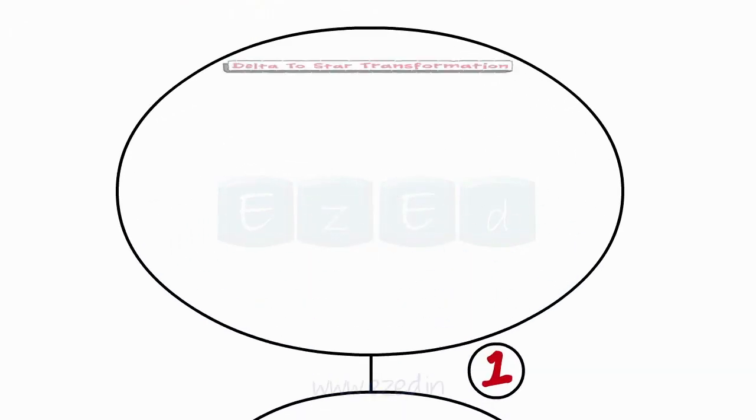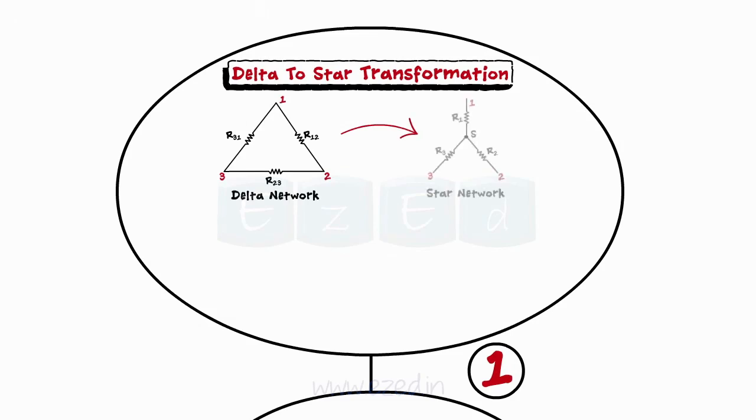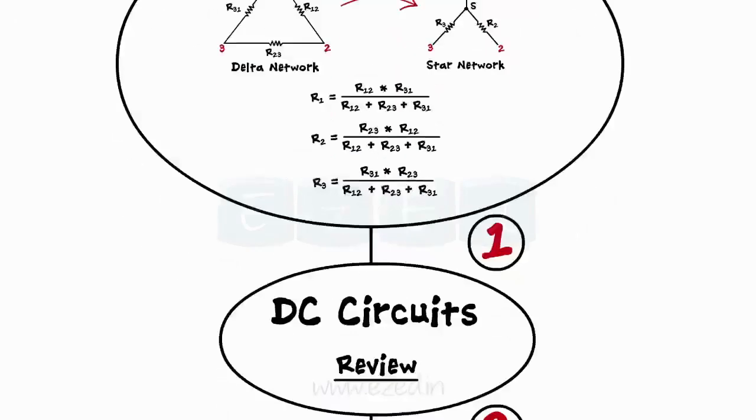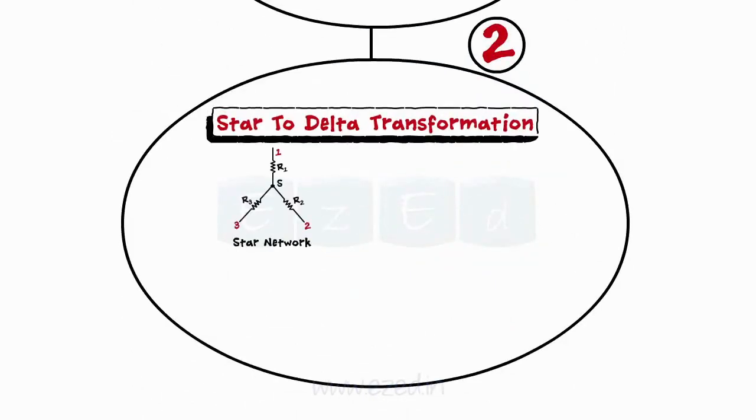Let's see what we've learned in this chapter. Thus, delta structure can be converted into the star using the formula shown. Similarly, star structure is converted into delta using the formula shown.